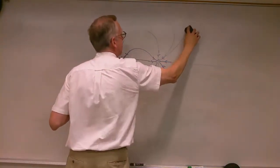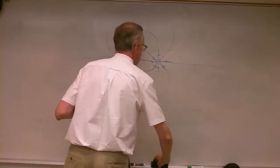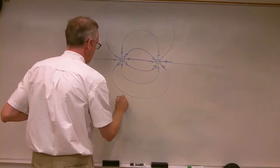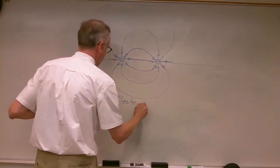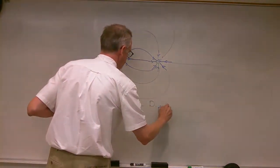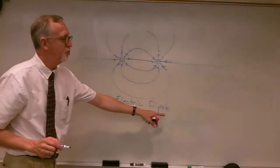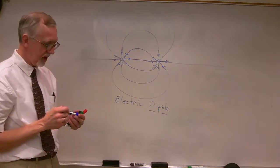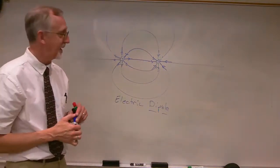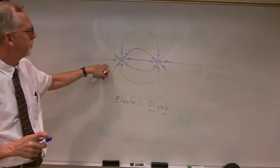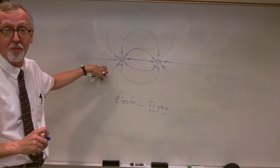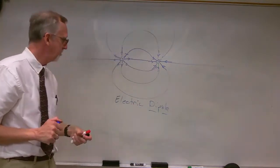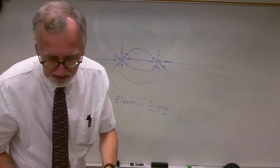This is the field of what we call an electric dipole — a dipole meaning two poles or two point charges. This is the electric field of two point charges, an electric dipole. This is a very, very important result. We'll come back to this and use electric dipoles more later on.